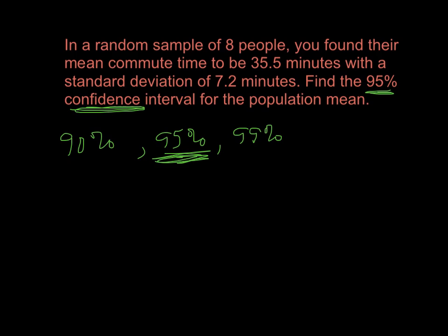So we've got our organization down. I know my sample size, how many people I surveyed. There were eight people. So N is eight. I also know that my sample mean was 35.5. So that's X bar. Sample mean is X bar.